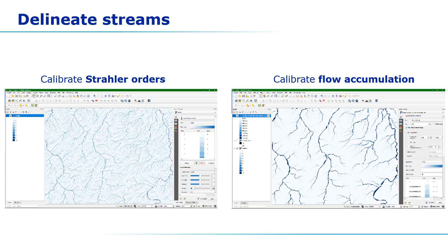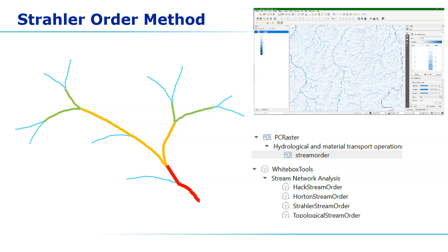In both cases we need to calibrate the results using a reference GIS layer — a river network on a topographical map or a satellite image where we can clearly identify the river network. Because both methods assign a value to every pixel, we need to determine the threshold value: the minimum value for which we can consider a pixel a river, i.e. the minimum Strahler order or minimum flow accumulation. The Strahler order method assigns an order of 1 to the smallest tributaries upstream. When two tributaries of the same order join, we increase the order. When a smaller order joins a higher order, we don't increase the order downstream — so order 1 joining order 3 remains 3, and two order-3 streams joining becomes order 4.